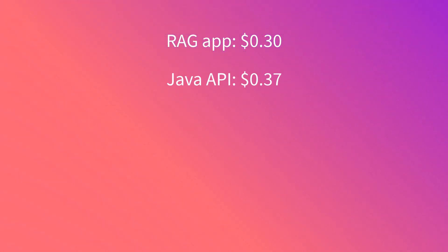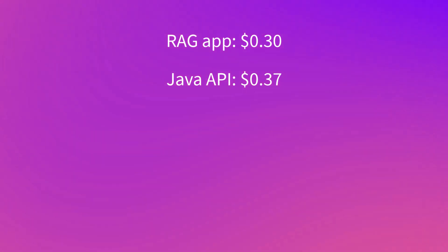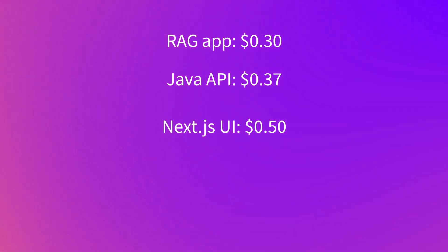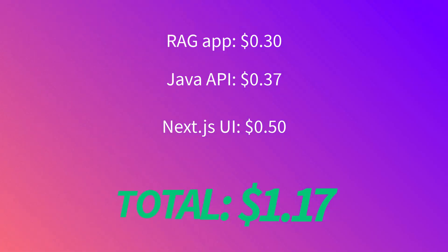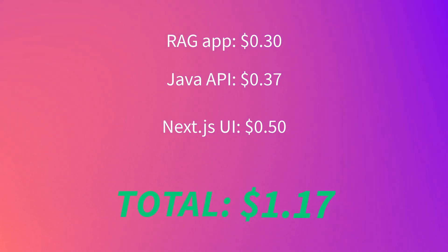Let's take a look at our totals for all three apps. For the RAG app, we spent $0.30 on Claude. For the Java API, we spent $0.37. For the Next.js UI, we spent $0.50, for a grand total of $1.17 to develop all three apps with AIDR and Claude.